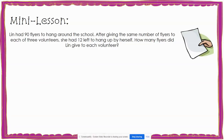In this problem, I noticed that Lynn had a total of 90 flyers and that she gave the same number to three volunteers, but she had 12 left to hang up herself. If I need to figure out how many she gave to each volunteer, I can represent this using a tape diagram.